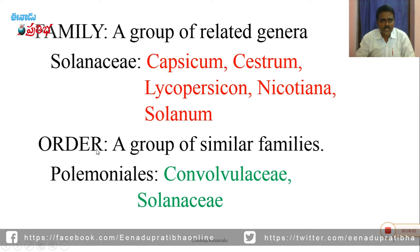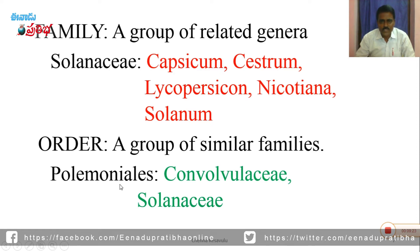Next one is order. A group of similar families is called an order. For example, Convolvulaceae and Solanaceae have similar characters and they are kept under the order Polemoniales. So Convolvulaceae and Solanaceae are grouped under the order Polemoniales.